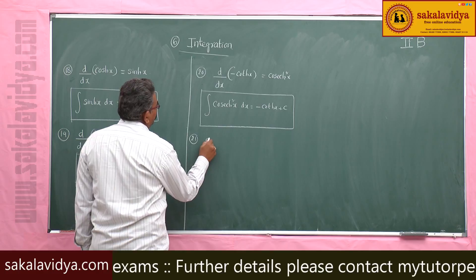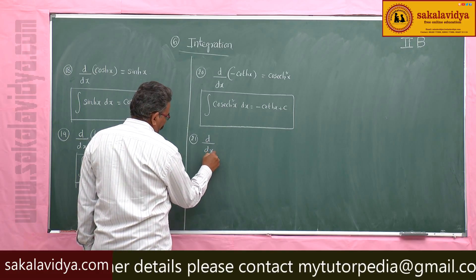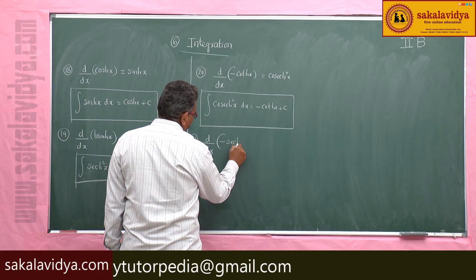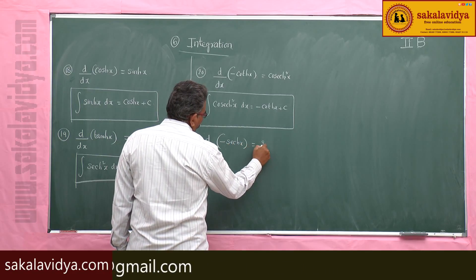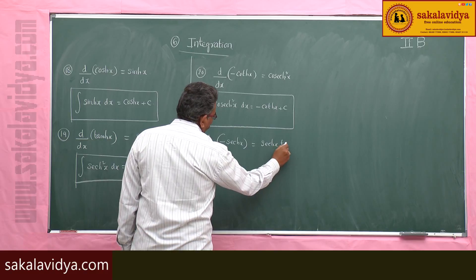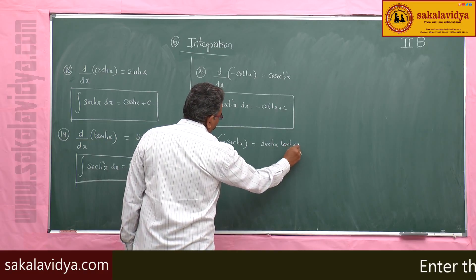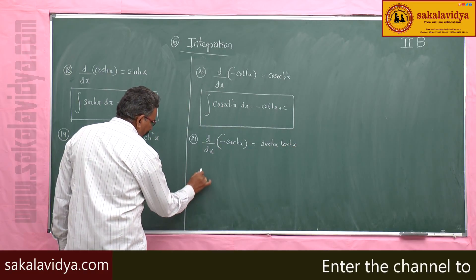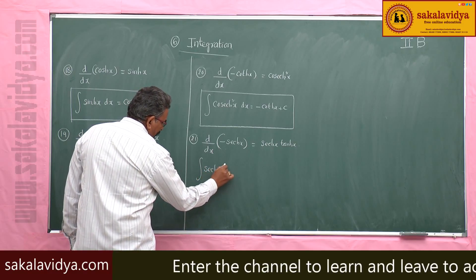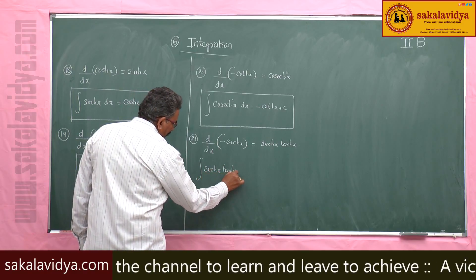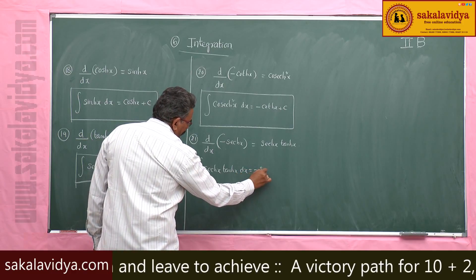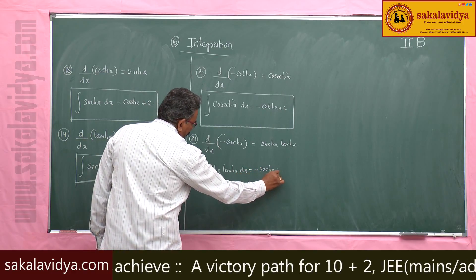Next, d by dx of minus sech x is sech x tanh x. So, integral of sech x tanh x dx is equal to minus sech x plus c.